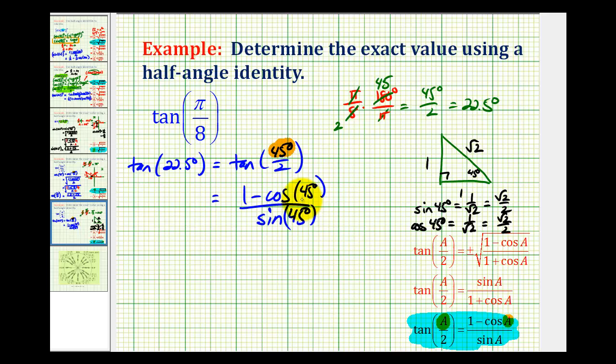So we can rewrite this as (1 - √2/2) divided by (√2/2).